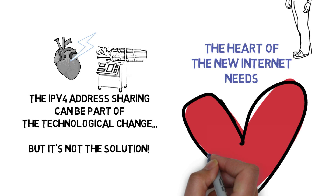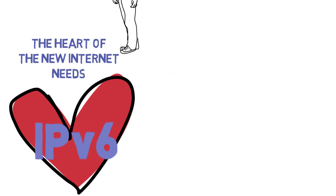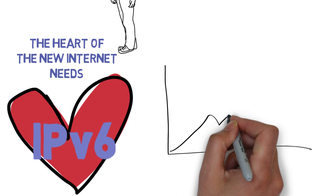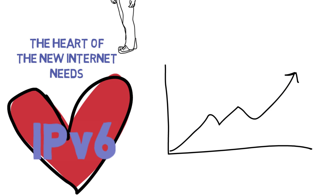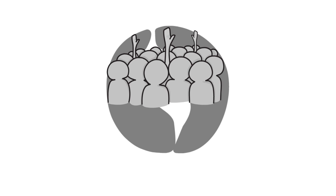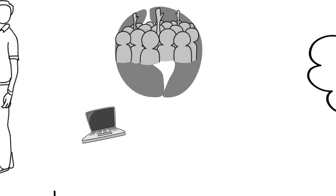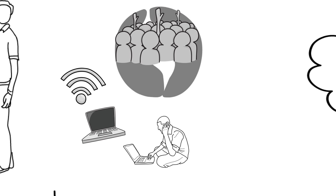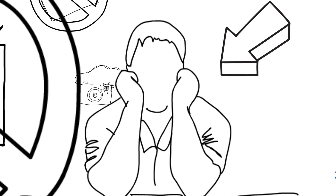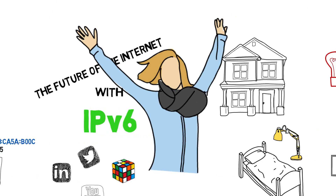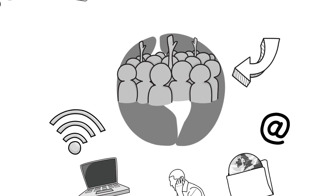But only with IPv6 as the new heart will the Internet continue to grow and develop as we want. The success of this technological change depends on many different people and companies: equipment vendors, software developers, content and service providers on the Internet, and ISPs. It also depends on John, Grace, and on you.